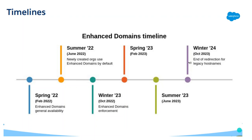The enforcement timeline: Summer 2022 — newly created orgs use enhanced domains by default. Spring 2023 — the same requirement continues. Winter 2024 — redirection from legacy hostnames to new hostnames will stop. Summer 2022 also marked general availability of enhanced domains, Winter 2023 saw enhanced domain enforcement begin, and Summer 2023 has no additional changes yet.